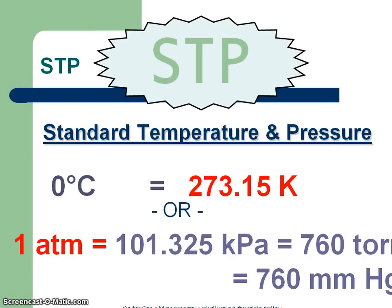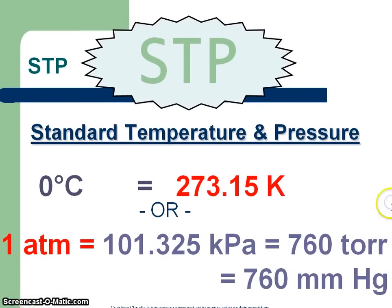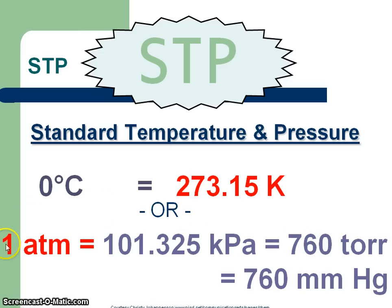STP — we used to have little STP stickers on wagons, but STP just means standard temperature and pressure. Standard temperature for gases is zero degrees — that's different from thermodynamics where it was 25°C (room temperature). For gases it's zero degrees, which is 273.15 Kelvin. Standard pressure is one atmosphere. These other values in blue are conversion factors — remember we want to keep it in atmospheres.